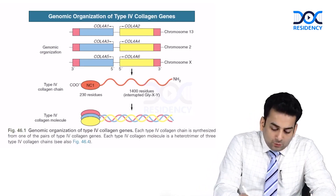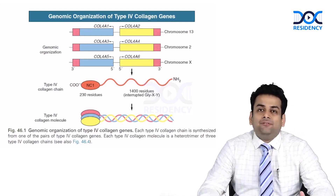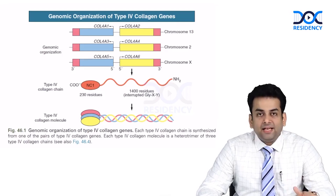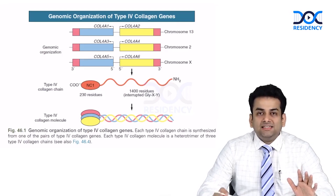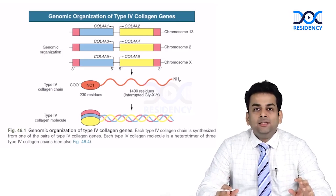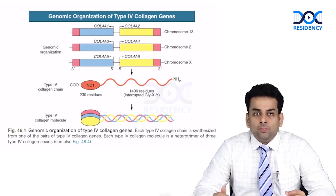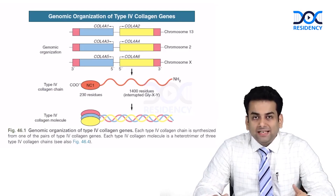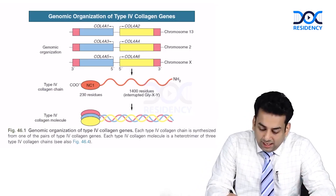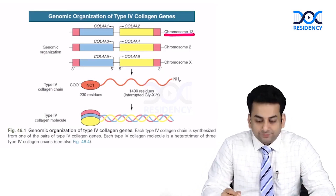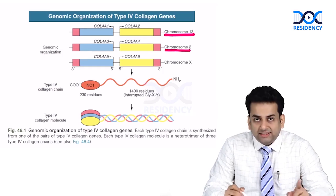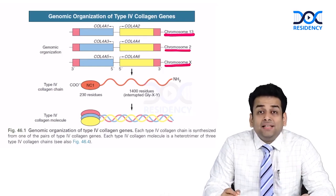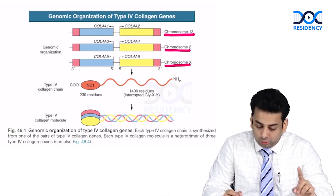Collagen IV is essentially made up of six alpha chains: Col4 A1, A2, A3, A4, A5, and A6. These six monomers combine in different permutations and combinations to form a chicken wire structure. Col4 A1 and A2 are coded by chromosome 13; Col4 A3 and A4 by chromosome 2; and A5 and A6 by chromosome X — please remember chromosome X.